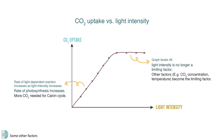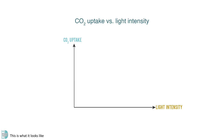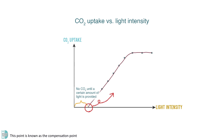Some other factors, such as carbon dioxide concentration, have become the limiting factor. However, the graph doesn't look like this in an actual experiment. This is what it looks like — it is as if the plant doesn't take up carbon dioxide until a certain amount of light is provided. This point is known as the compensation point.